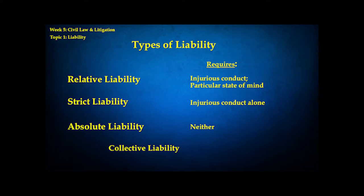Even broader than that is absolute liability. In absolute liability, you don't have to have done anything or thought anything in particular — you can be held responsible just for being there. Liability depends only on your social location; people are held responsible just because of who they are or where they are. One subtype is collective liability, where all members of a social category are held responsible for the wrongdoing of some other member. This is the social logic of feuds, ethnic conflicts, and people being held responsible for the sins of their ancestors — where your conduct and mental state are irrelevant, and it's who you are that makes you guilty.